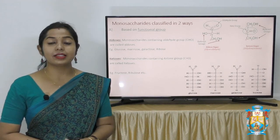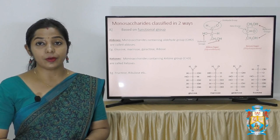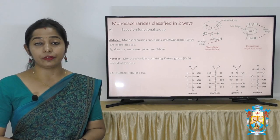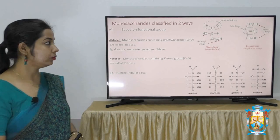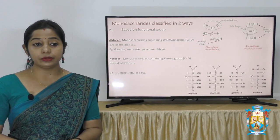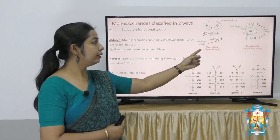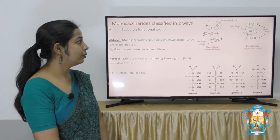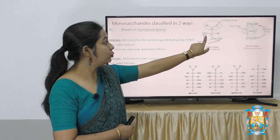Monosaccharides are classified in two ways: based on their functional group and based on their number of carbons. Based on functional group, they are of two types — aldoses and ketoses. Aldoses are monosaccharides which contain an aldehyde group. Examples are glucose, mannose, galactose and ribose. As you can see, this is the structure of glyceraldehyde, which is an aldose sugar. At the first position there is an aldehyde group, and it also has two hydroxyl groups.